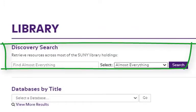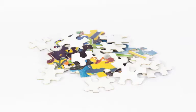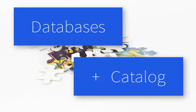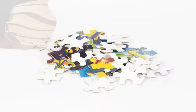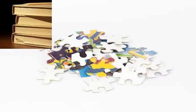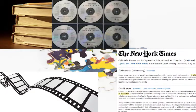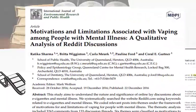Discovery Search is a mega-database. It searches a bunch of individual subject databases, plus the Purchase College Library catalog, all at once. Discovery Search does not search everything in the library's collection, but it searches a whole lot of books, music, films, journals, and academic journal articles.